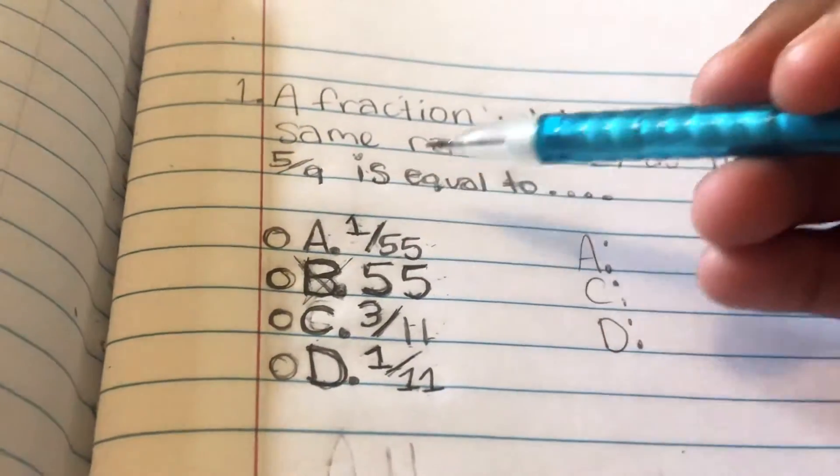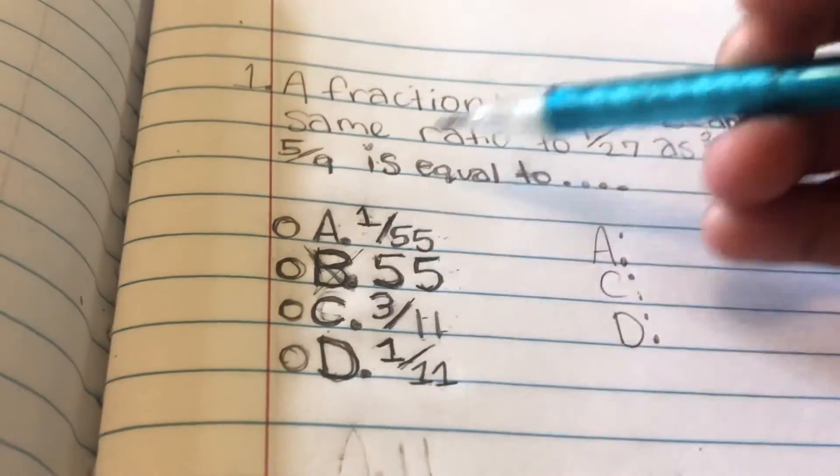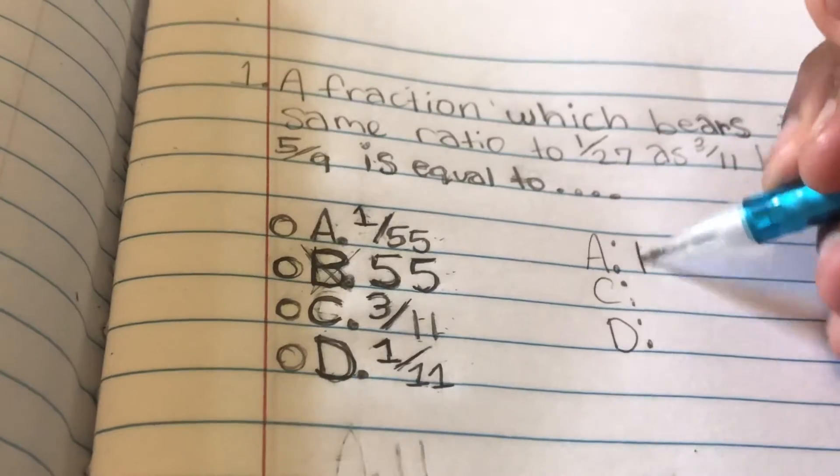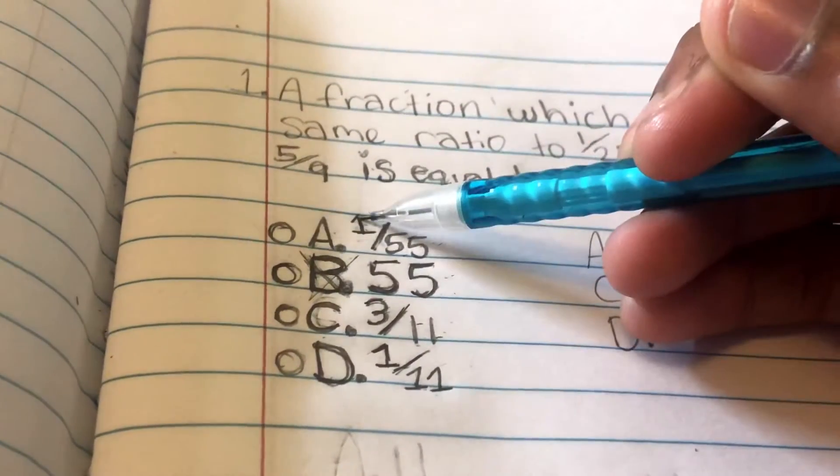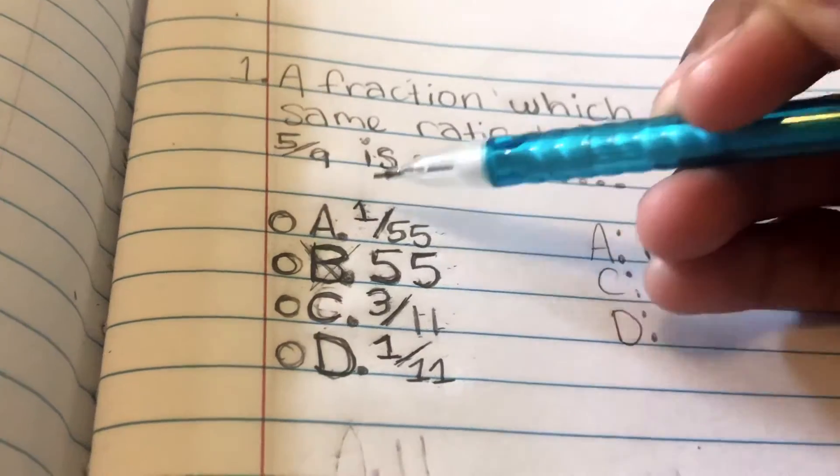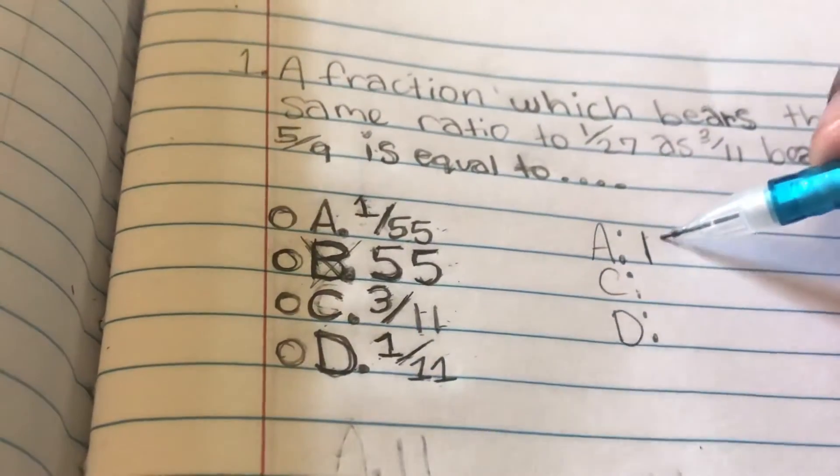A is a fraction, so we can put a mark for that, a tally mark. And if we look at the numerator, A is one. What else has a numerator of one? D. So we can put another tally mark for that.